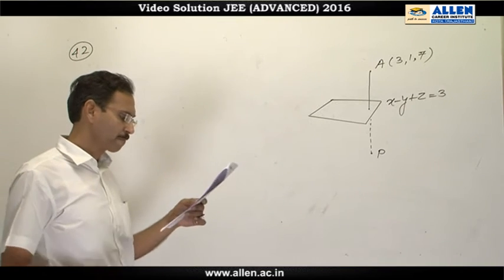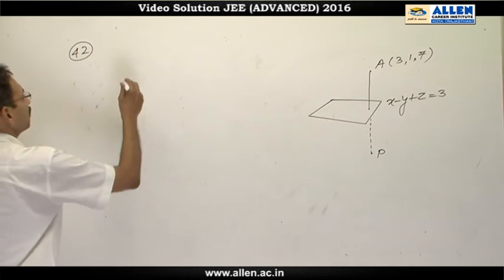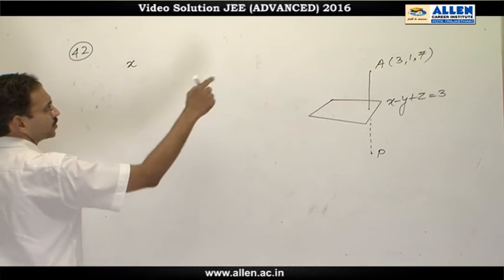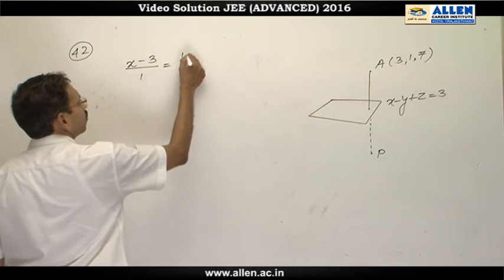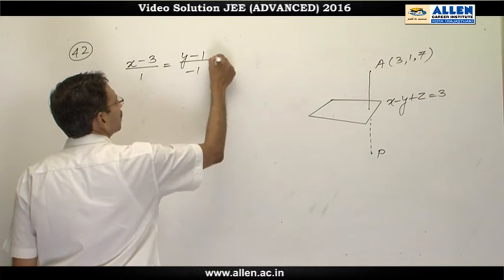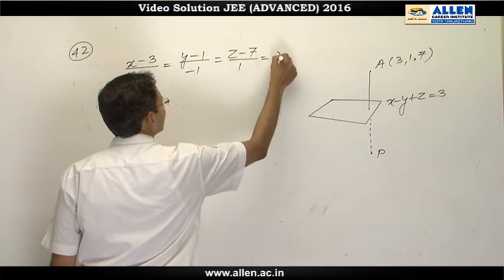We will find out the point P and then find the plane. To get point P, we will write the equation of line AP: (x-3)/1 = (y-1)/(-1) = (z-7)/1. Let's say this is λ.